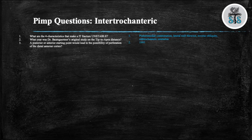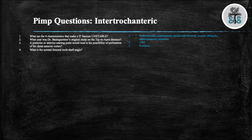Question 3: A posterior or anterior starting point would lead to the possibility of perforation of the distal anterior cortex? Posterior. Question 4: What is the normal femoral neck shaft angle? 130 degrees. Question 5: What is the advantage of using a 4-hole side plate when compared to a 2-hole side plate? There is no advantage.